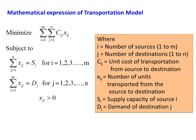Subject to constraints: sigma (j=1 to n) xij = si, for i=1 to m; and sigma (i=1 to m) xij = dj, for j=1 to n. Here xij is always greater than or equal to 0 (non-negative). Where si is the supply capacity of source i and dj is the demand of destination j. This is the mathematical expression of the transportation model.